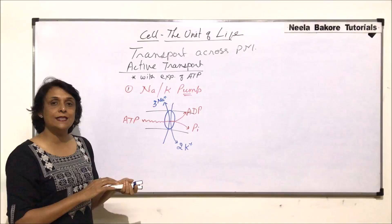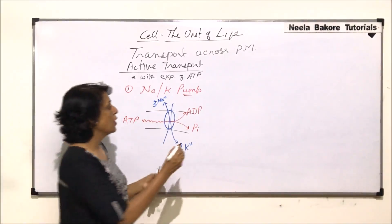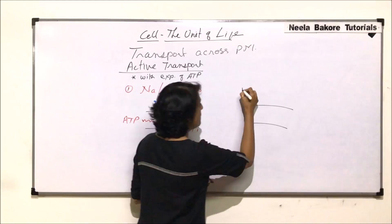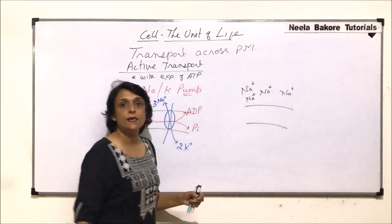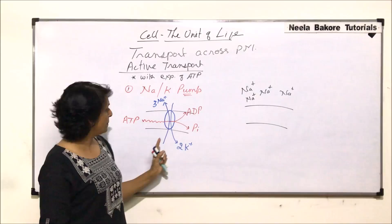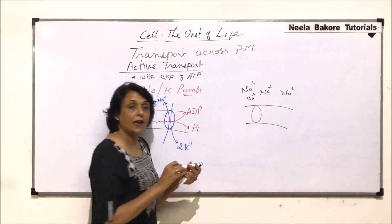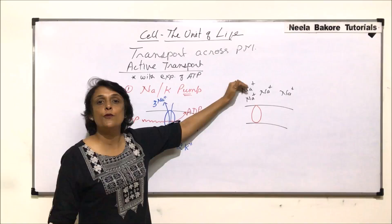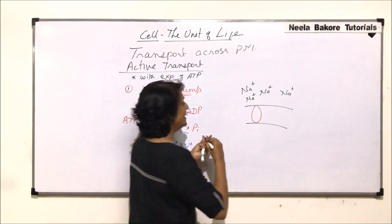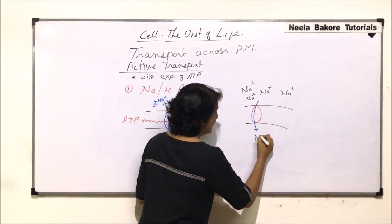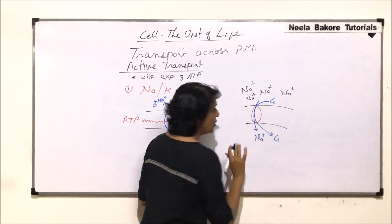If this type of transport continues, there would be more sodium ion concentration outside the cell — sodium ion concentration keeps increasing. These sodium ions, when they come back into the cell, move from higher concentration to lower concentration. And when these sodium ions come in, they bring glucose along with them, so glucose also enters the cell.